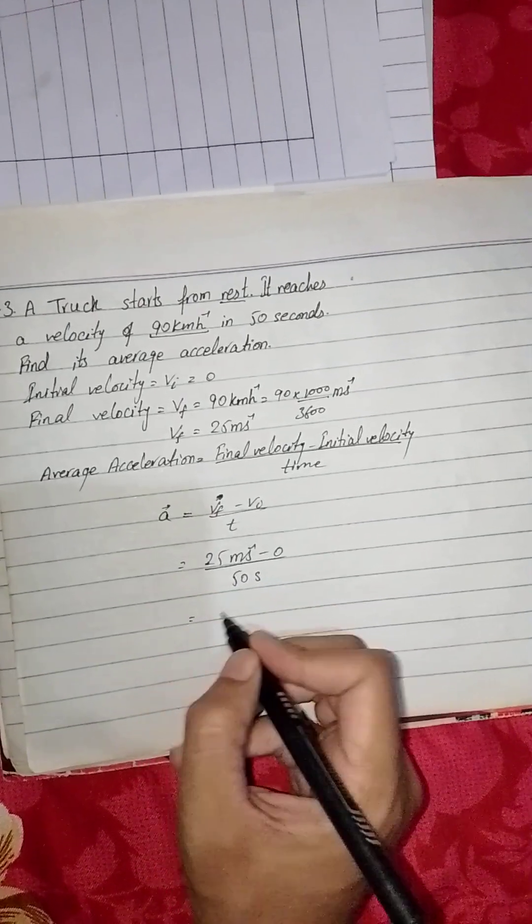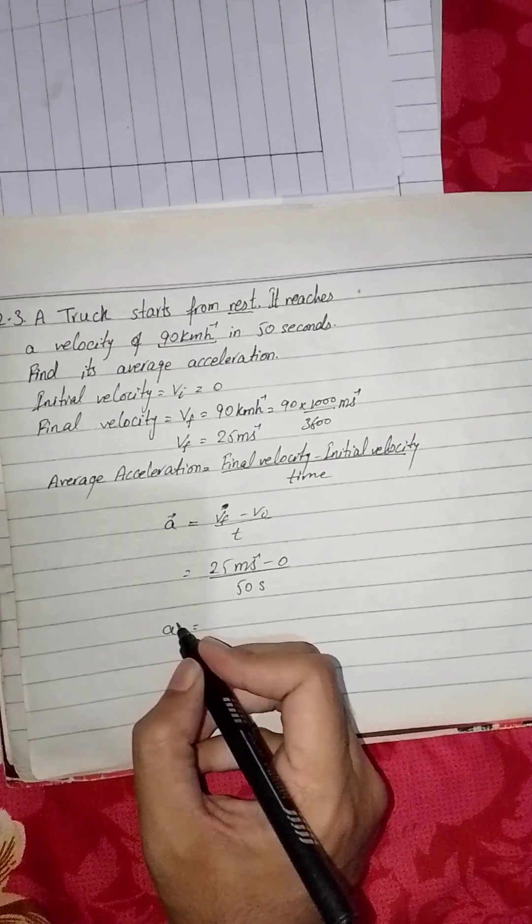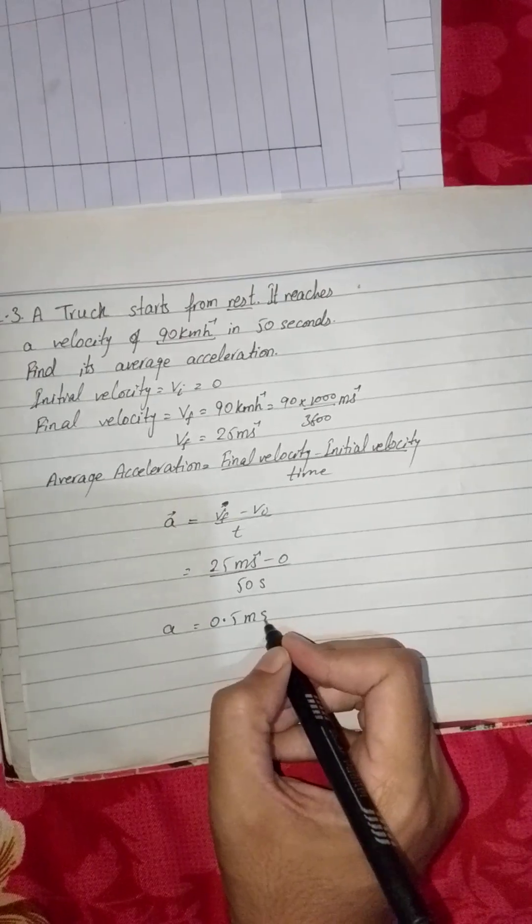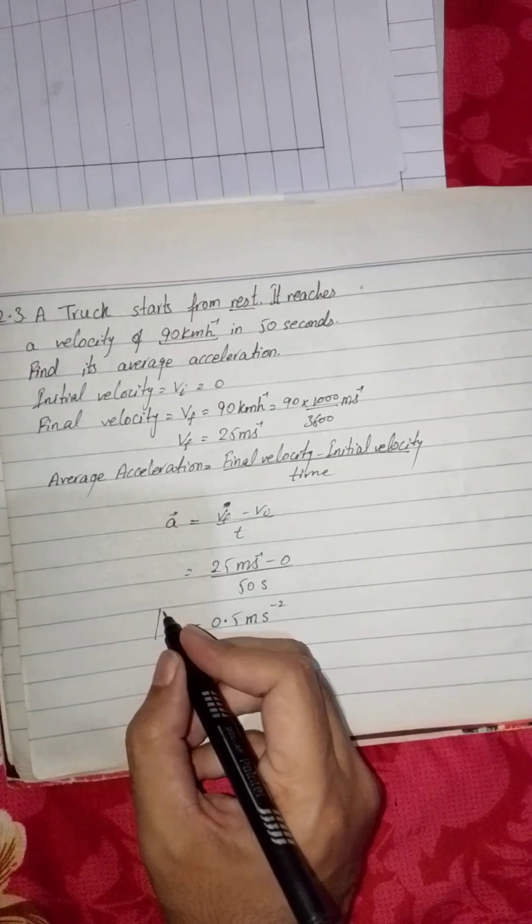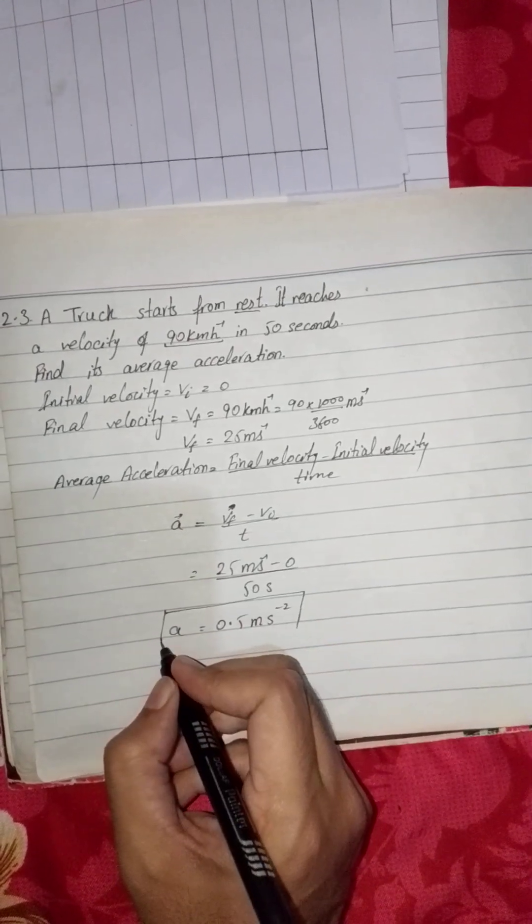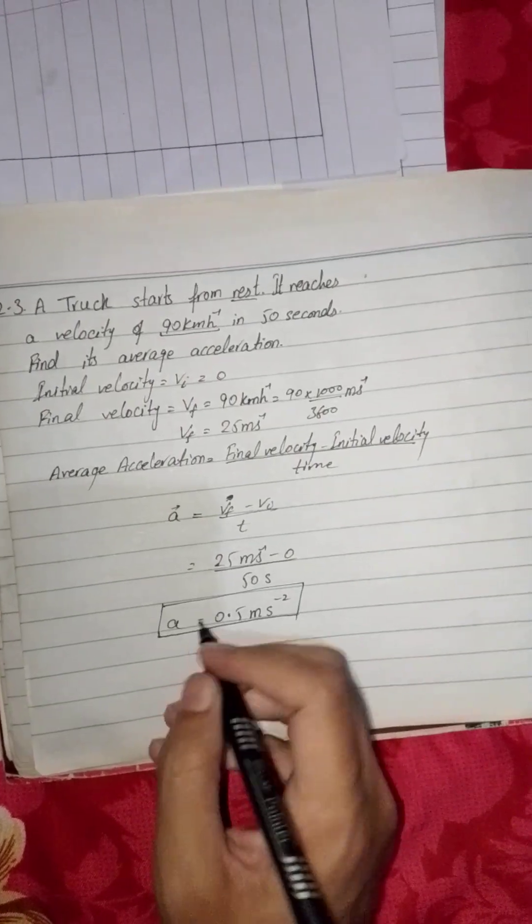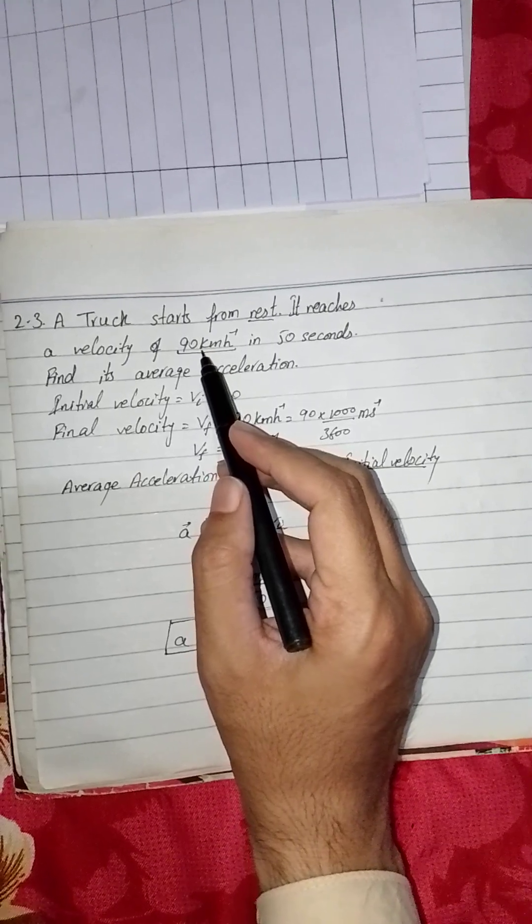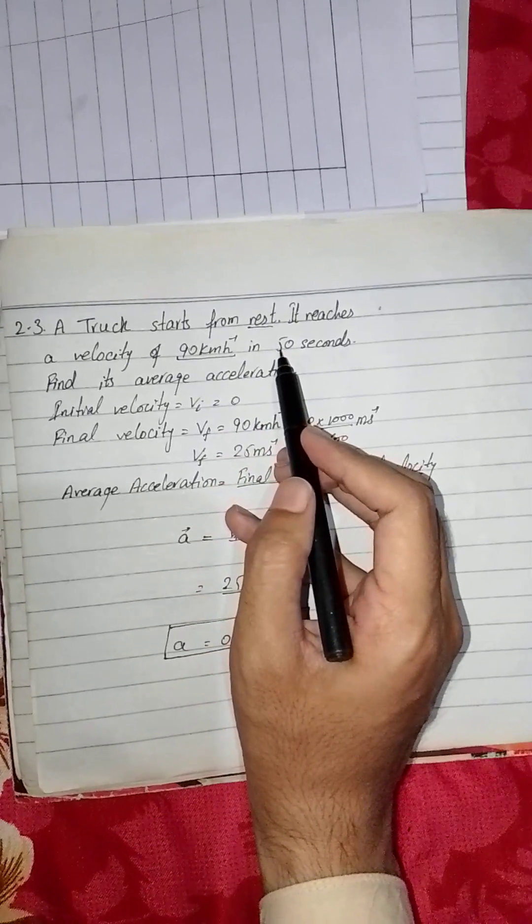On dividing these values we get acceleration 0.5 meter per second square. So this is the acceleration produced in a truck which starts from rest and gains a speed of 90 kilometers per hour in 50 seconds.